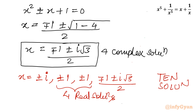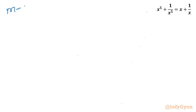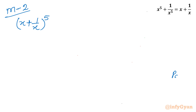Now let us consider method number 2 using binomial expansion. I will use the expansion of (x plus 1 over x) whole power 5. I need to know the coefficients, so let me write Pascal's triangle for power 5.